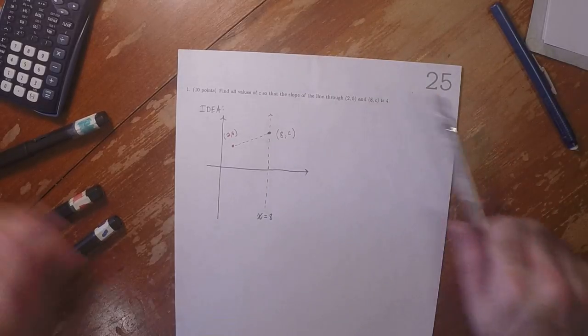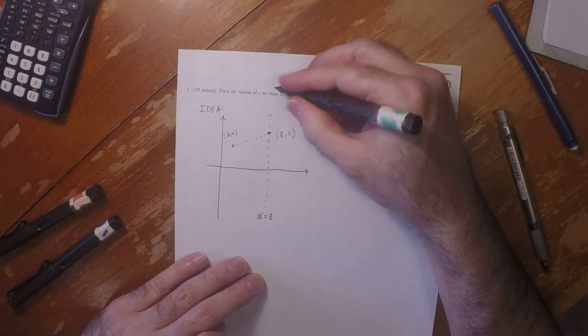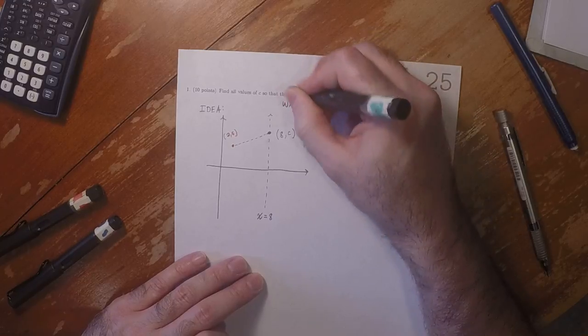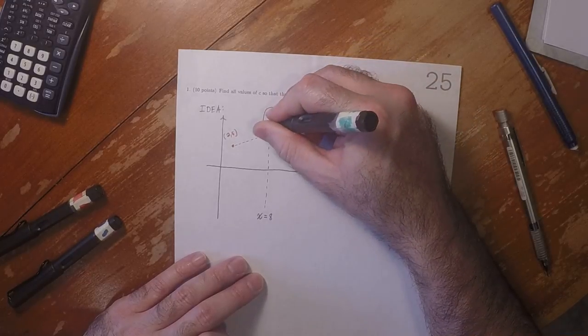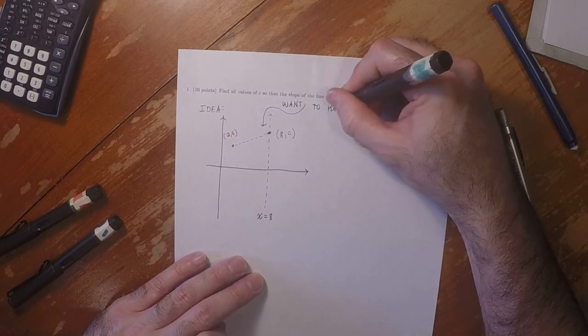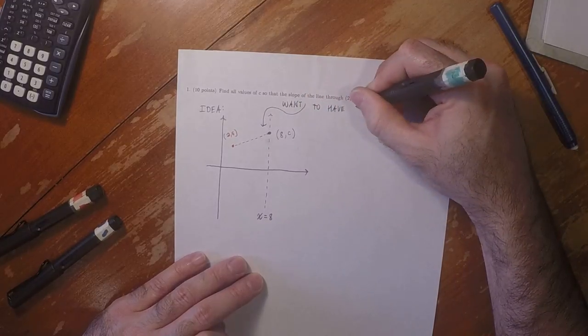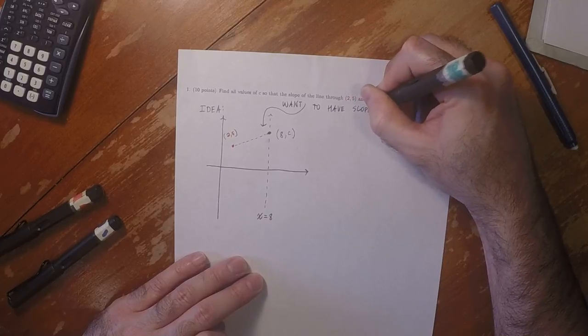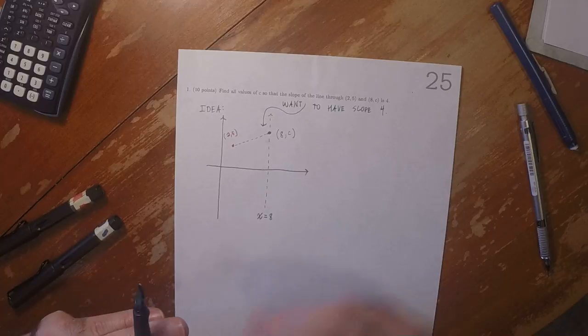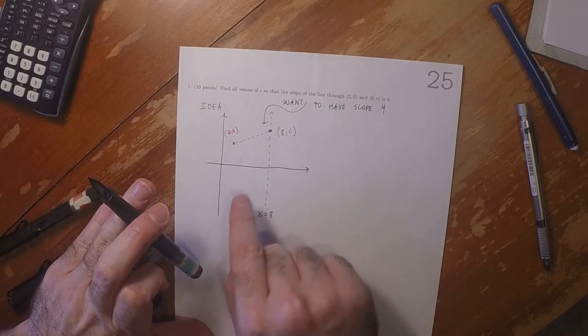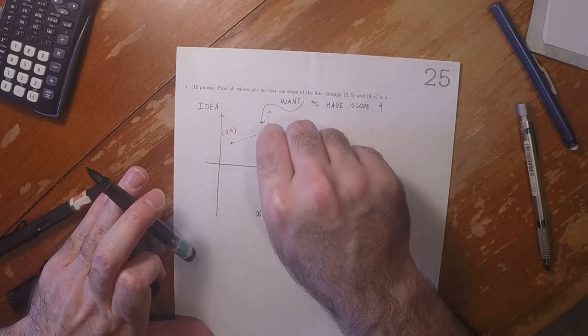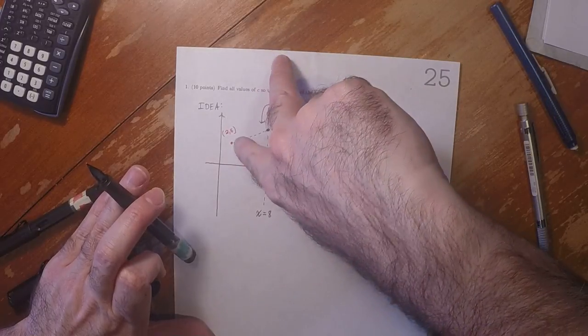So we want that to have slope 4. So according to my eye anyway, if this plot is anywhere close to being correct, we'd have to push this point up higher until it has slope 4.